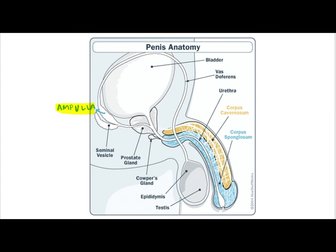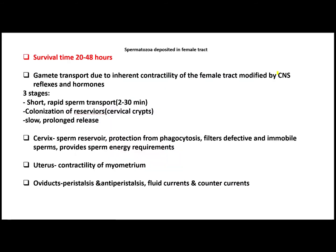From the epididymis, sperms go to the vas deferens, then to the ampulla. From the ampulla, they are joined by the seminal vesicle, prostate gland, Cowper's gland, and finally by the urethra. After ejaculation, sperms are deposited in the female genital tract, where they survive for 20 to 48 hours.